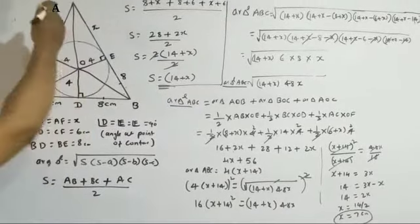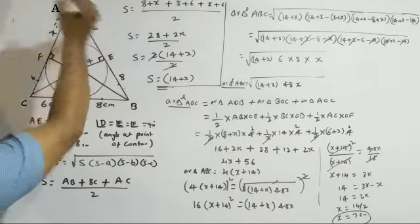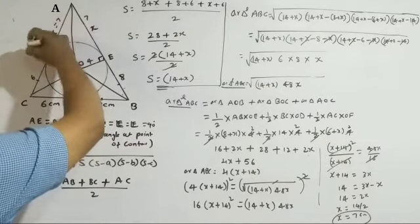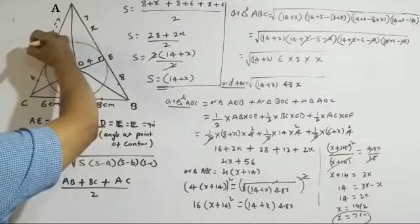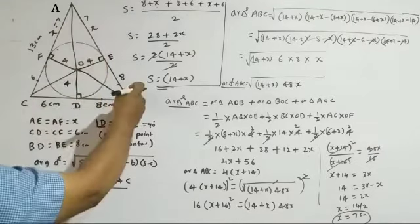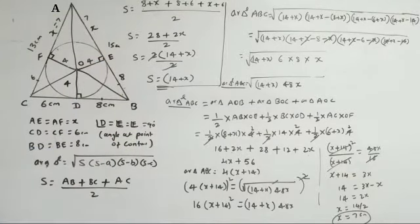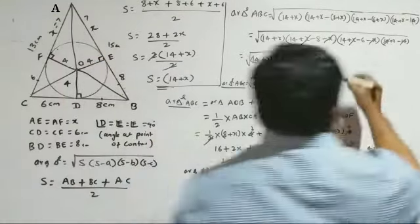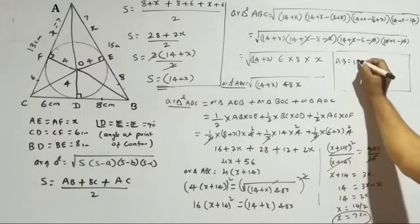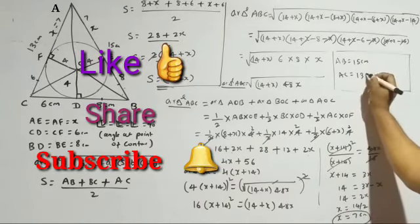So X = 7 cm. Now, AC = 6 + 7 = 13 cm. Similarly, AB = 8 + 7 = 15 cm. Finally, we found that AB = 15 cm and AC = 13 cm.